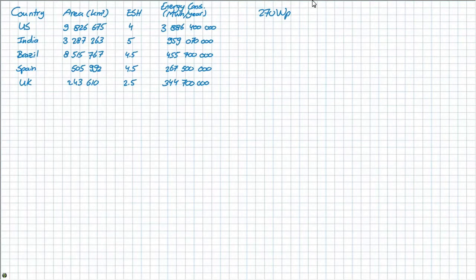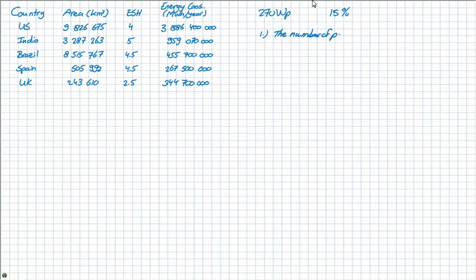Moving on to the second question. It asks the percentage of US area that you would need to cover to supply its annual energy demand if the solar panels have an efficiency of 15%. To calculate this, you need to know two things: first, you want to know the number of panels, and second, you want to know the area per panel.